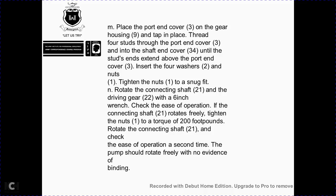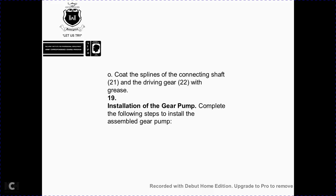Place the port cover over gear housing 9 and tap into place. Place thread stubs 4 through the port cover and port end cover 3. Insert four washers 2 and nuts; tighten the nuts snug. Rotate connecting shaft 21 with drive gear 22 using a six-inch wrench and check the ease of operation — shaft 21 must rotate freely. Tighten nuts 1 to a torque of 200 foot-pounds. Rotate connection 21 again and check ease of operation a second time; the pump should rotate freely with no evidence of binding.